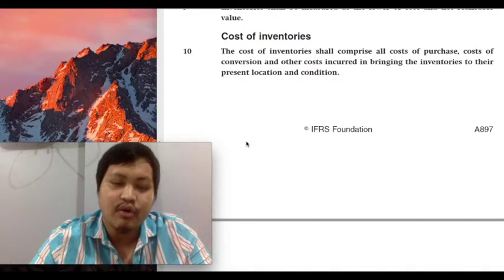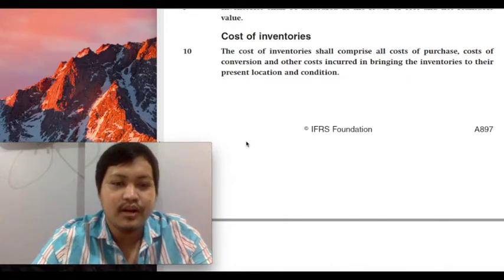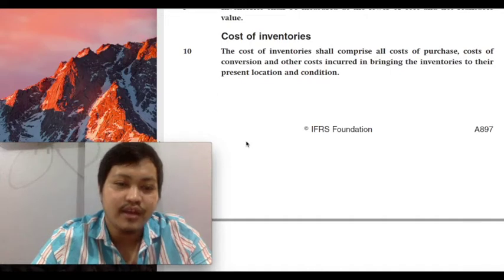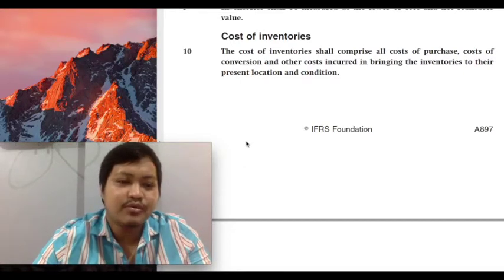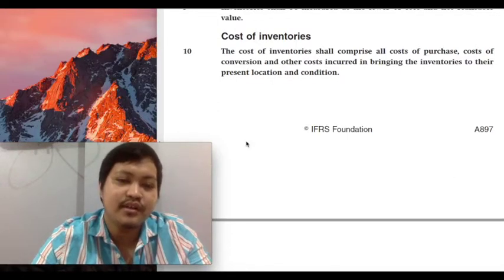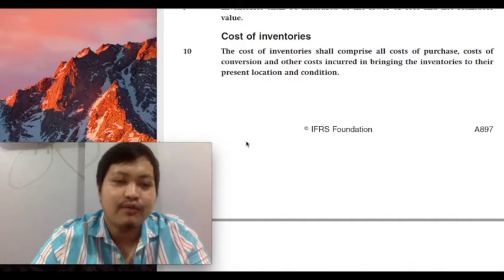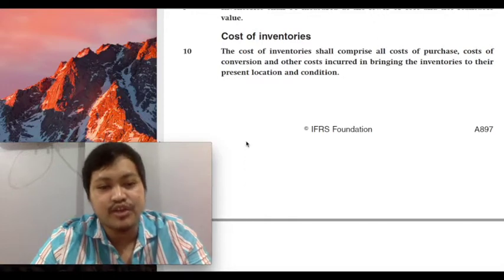There are problems in which the only task expected from you is to identify whether a certain cost is inventoriable or not. When we say inventoriable, we mean it is to be included in the cost of the inventory. You will be given an enumeration — say 10 items with different amounts — and the question will simply ask: out of those costs, how much should be included as part of the cost of inventories? The function required of you is to simply add those that are considered inventoriable: the cost of purchase, the cost of conversion, and all necessary costs to bring the asset to its present location and condition.